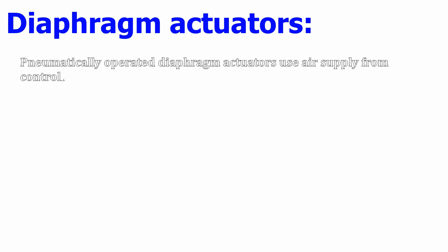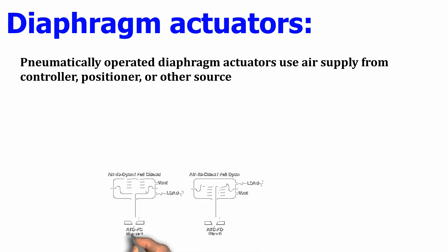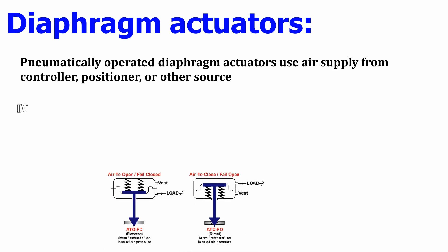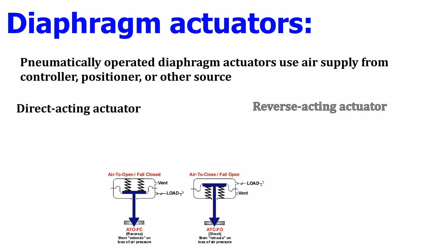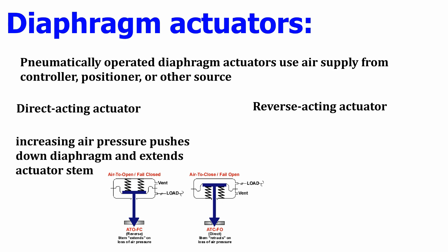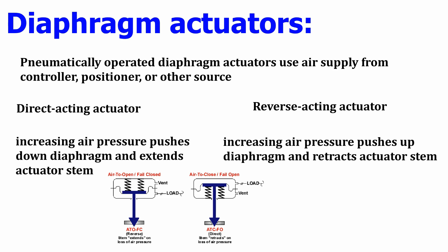First and foremost, what is a diaphragm actuator? Diaphragm actuators are pneumatically operated using air from a controller, positioner, or other sources. They are classified into two types: direct acting and reverse acting. In a direct acting actuator, increasing air pressure pushes down the diaphragm and extends the actuator stem downward. In a reverse acting actuator, increasing air pressure pushes up the diaphragm from the bottom, thereby retracting the actuator stem.